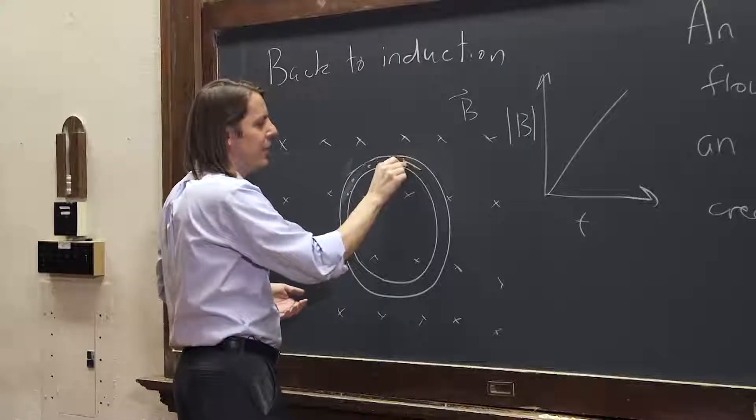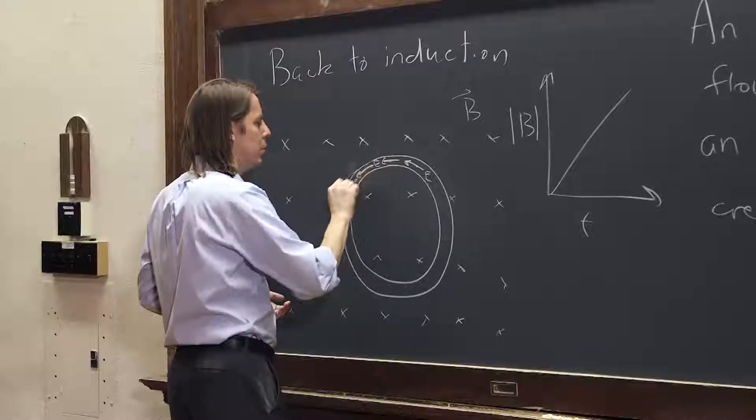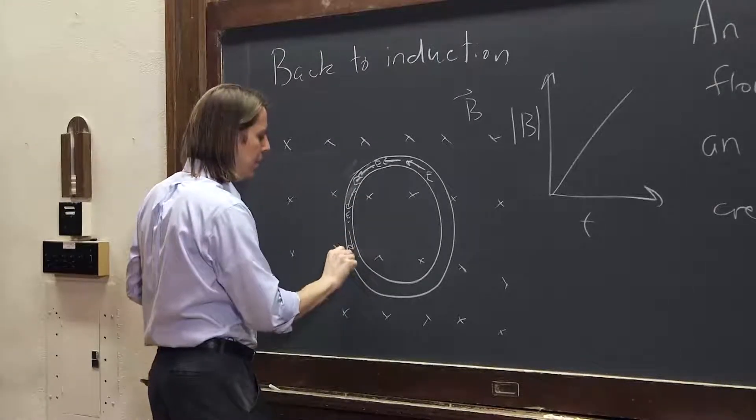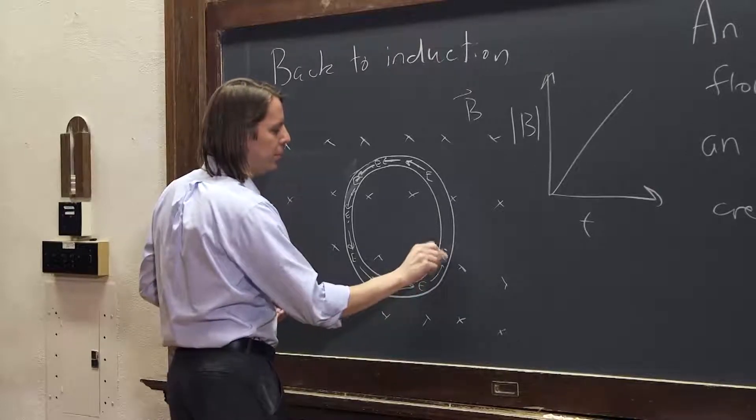If it's not the B field, there has to be an E field. So there's an E field circulating around the loop in the same direction that the current would go. We know the induction occurs all the way around the loop, so this E field is all the way around the loop.